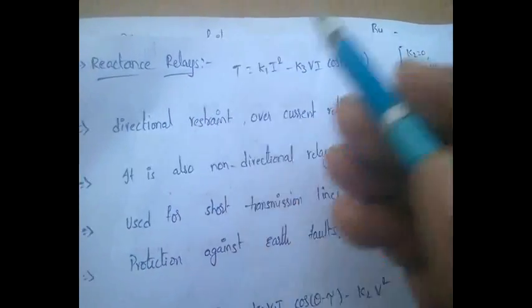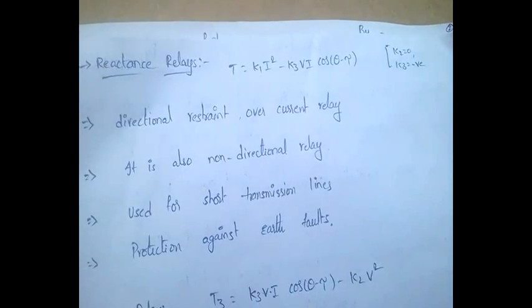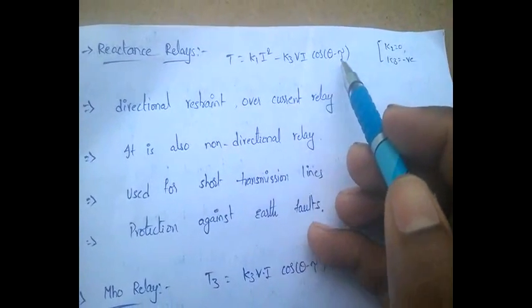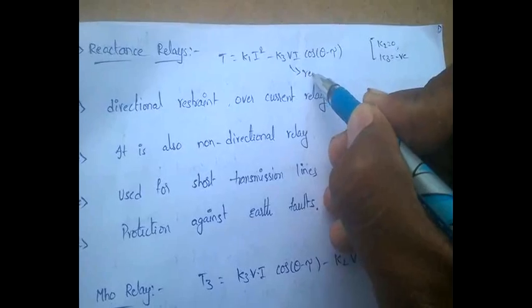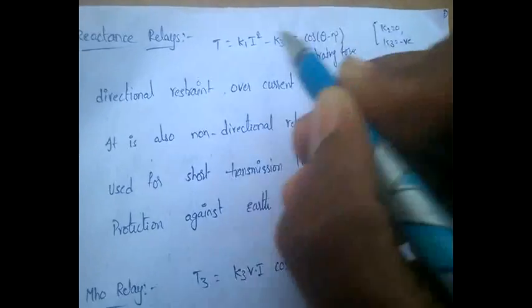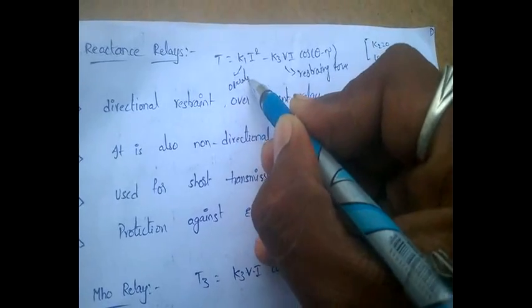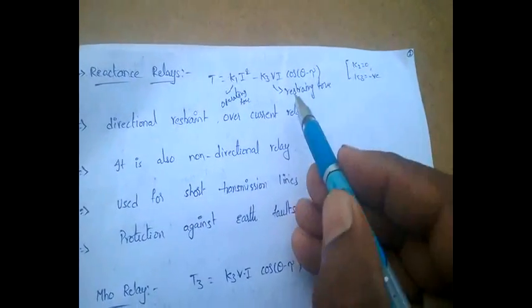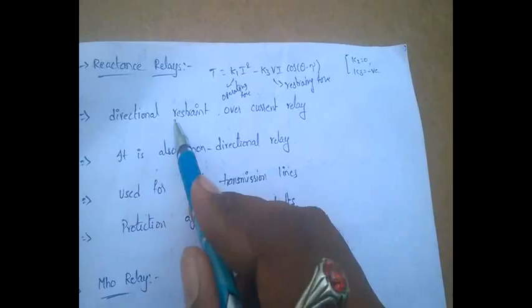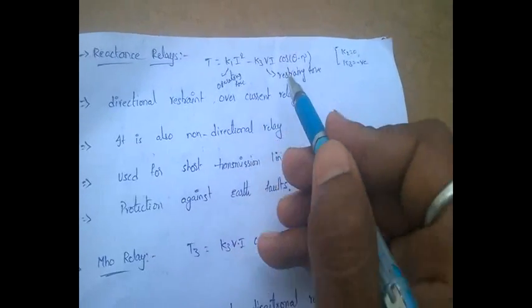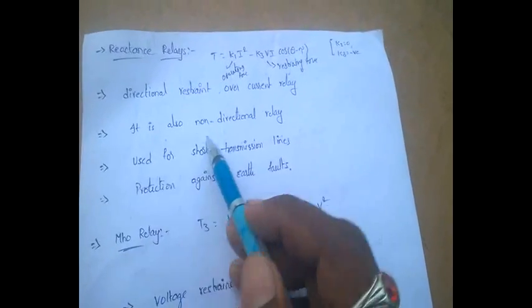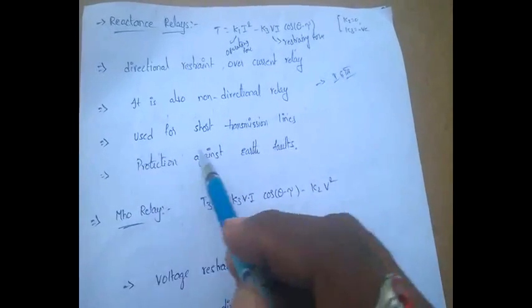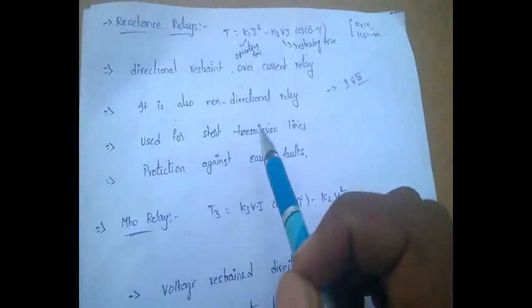For reactance relay, the torque equation is T = K1·I² − K3·V·I·cos(θ − τ). Here the restraining force is the directional part, and the operating force is current. So reactance relay is called a directional-restraint overcurrent relay. It is also a non-directional relay, operating in both first and third quadrants. Reactance relay is used for short transmission lines.